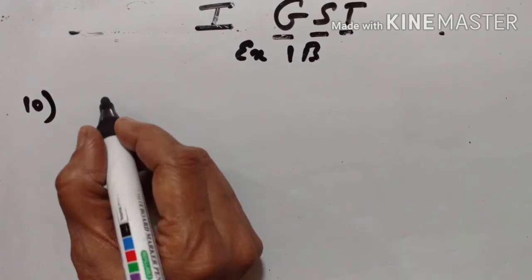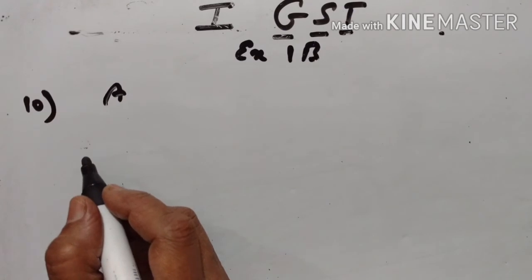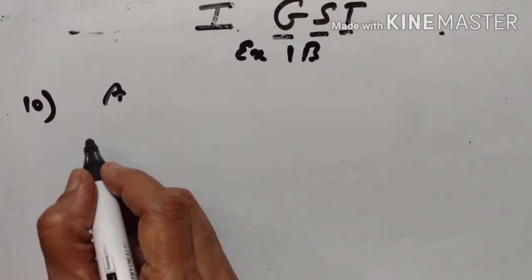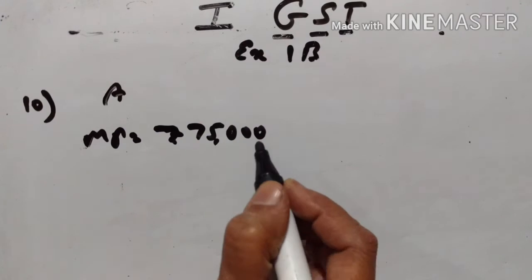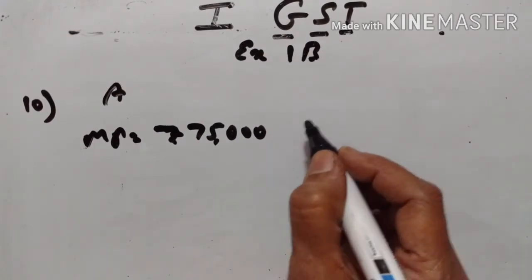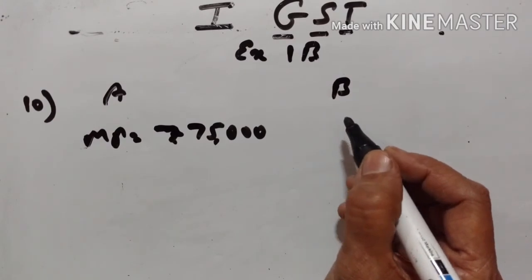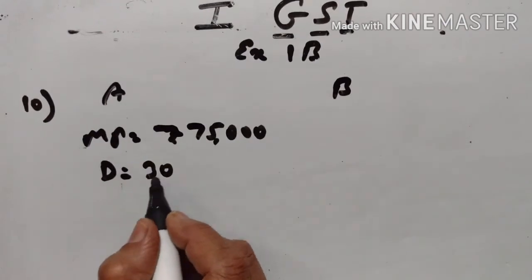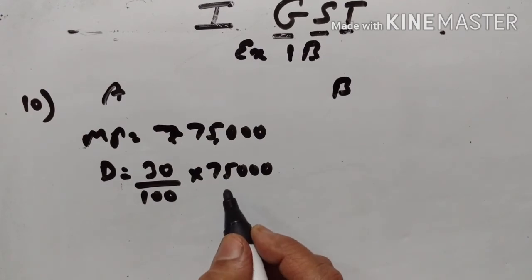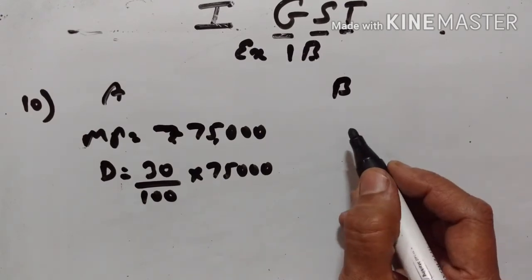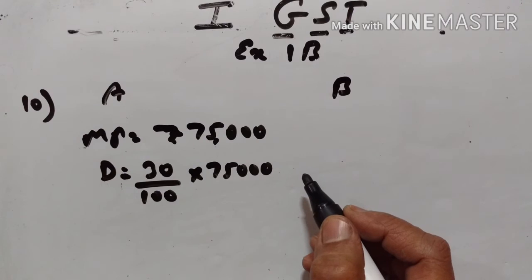10th problem: A is a manufacturer of TV sets in Delhi. He manufactures a particular brand of TV set and marks it at Rs.75,000. He then sells it to a wholesaler B in Punjab at a discount of 30%.